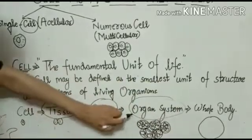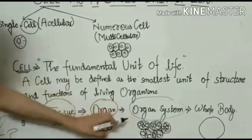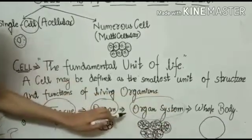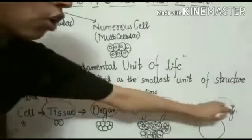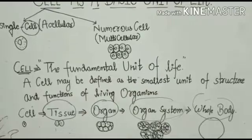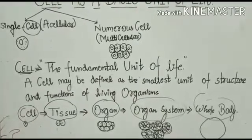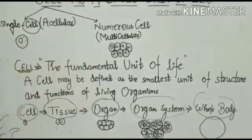Digestive system, excretory system, nervous system. And when we combine these organ systems, what will become? Whole body. So this way, we know that a cell is responsible for making a whole body.